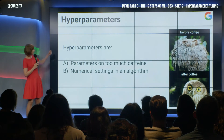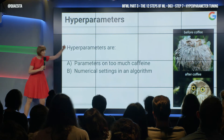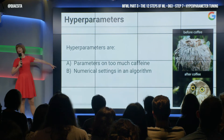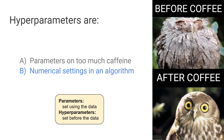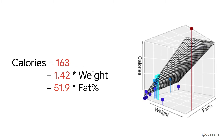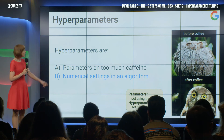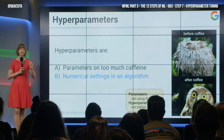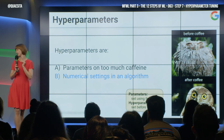I give you multiple choice. Hyperparameters are either A, parameters on too much caffeine, or B, numerical settings in an algorithm. Which one is it? B. So what is a parameter in machine learning? When we were doing that regression example, the numbers in red that we could tinker and fiddle with to adjust our solution, like the intercept and slope, those were parameters. A hyperparameter is something that is there before your data even hits the algorithm.